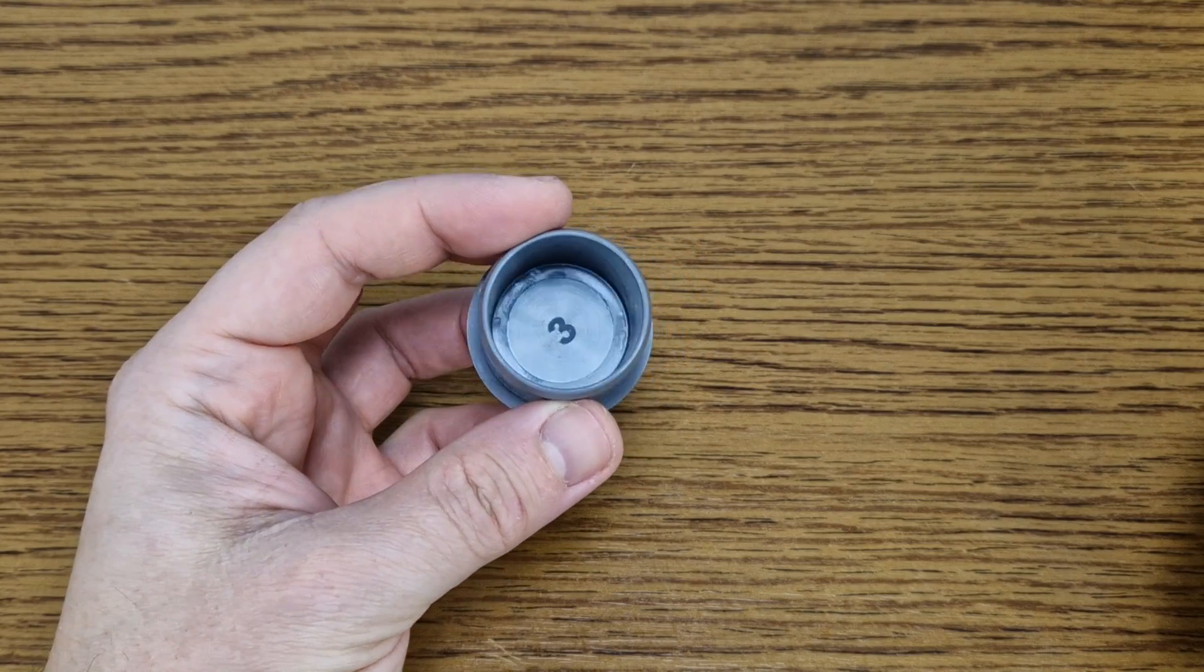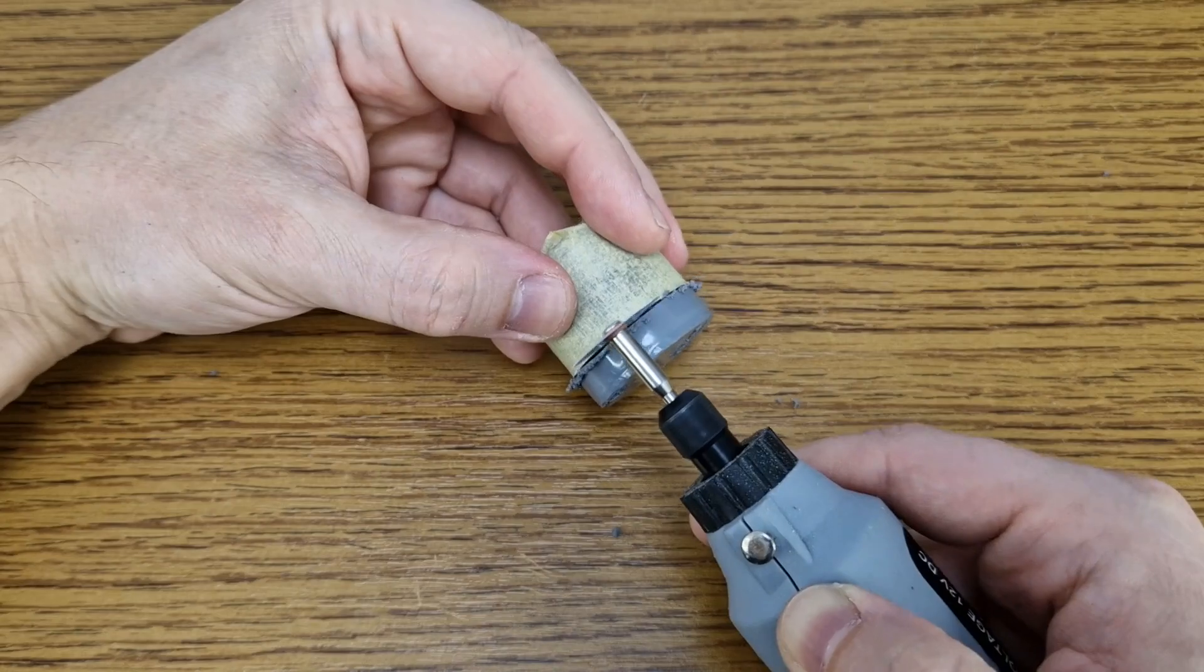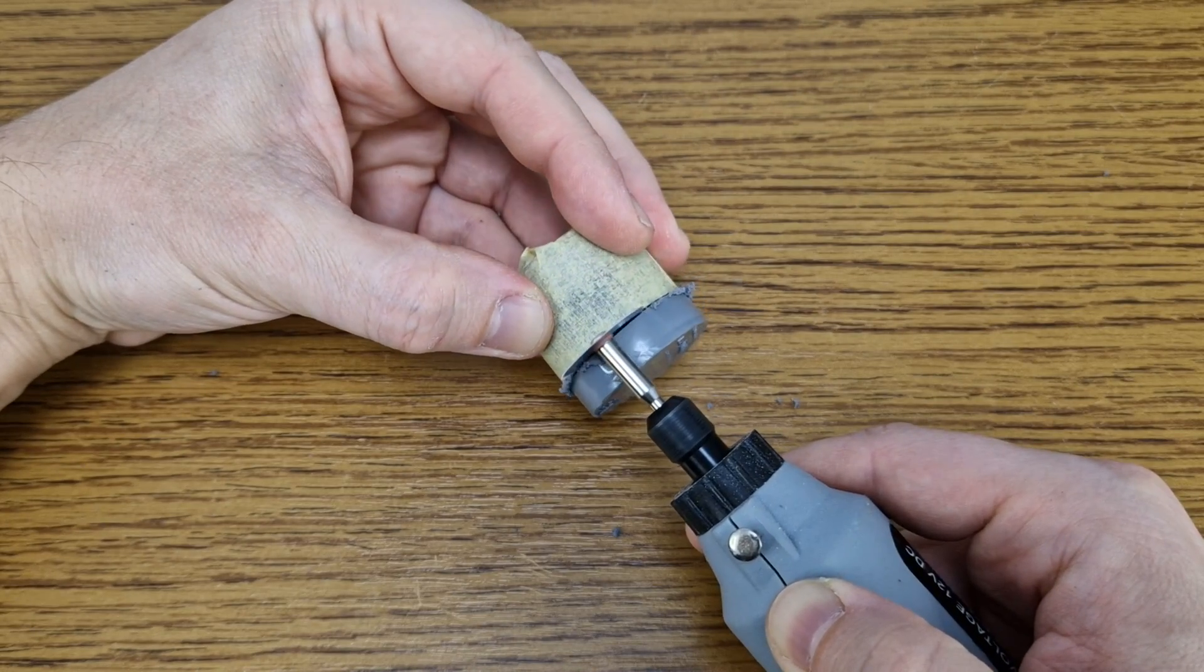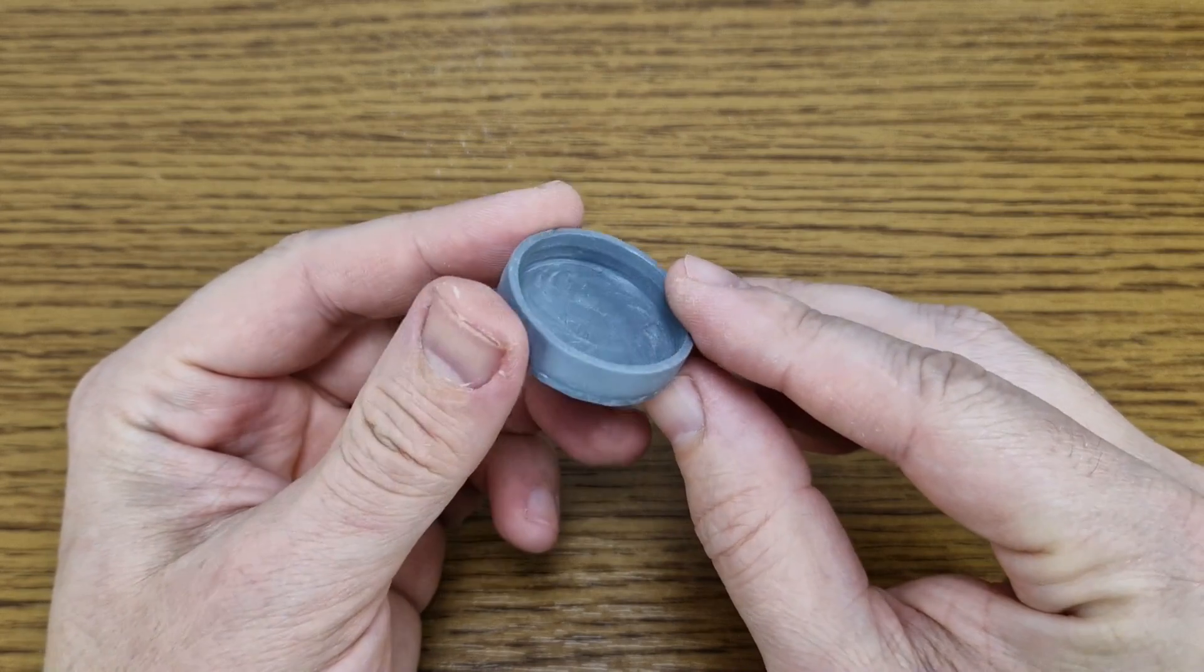I need to modify this PVC cap to fit it in the back of the flashlight, so I will cut most of it. This is how it looks after using some sandpaper and cleaning it.